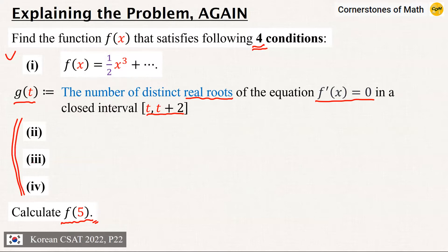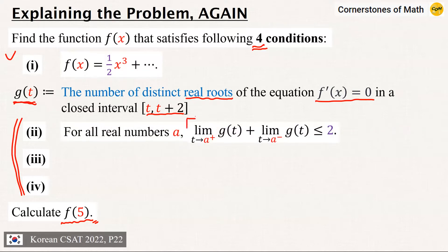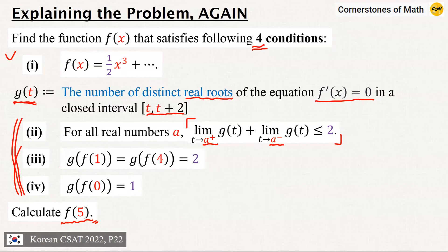The remaining three conditions for our cubic function f(x) all involve this newly defined function g(t). The first of them is: for all real numbers a, the limit of g(t) as t approaches a from the right, plus the limit of g(t) as t approaches a from the left, is less than or equal to 2. The other two conditions are about the values of function g at specific values. I would like to split them like this: g(f(1)) = g(f(4)) = 2 as the third condition, and g(f(0)) = 1 as the fourth condition.